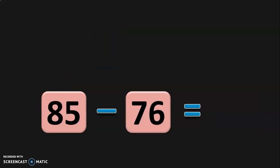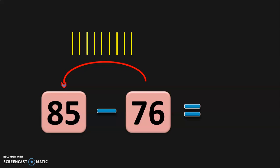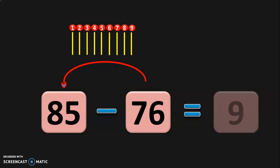Let us do another sum using forward subtraction: 85 minus 76. Move from 76 to 85 in the forward direction — 77, 78, 79, 80, 81, 82, 83, 84, 85. How many numbers did we need? 1, 2, 3, 4, 5, 6, 7, 8, 9. We needed 9 numbers, so 85 minus 76 is equal to 9. This is an important concept; visit the forward subtraction video for class 1 linked below.